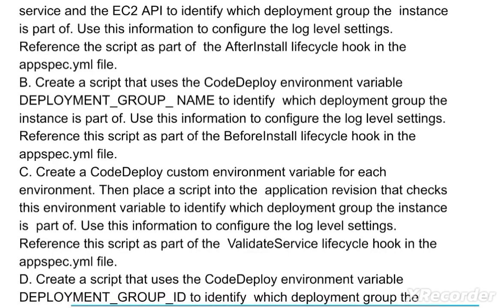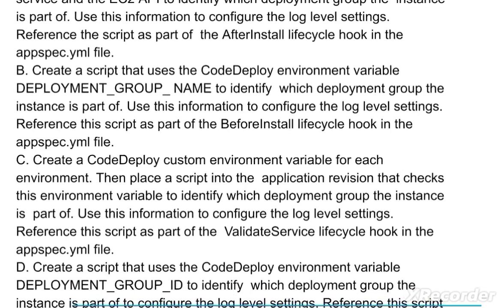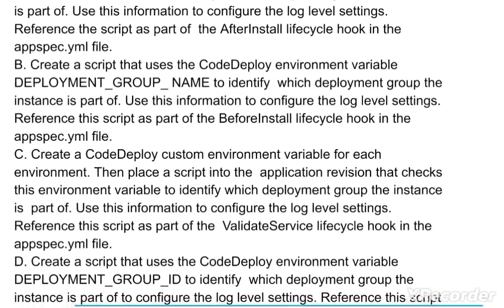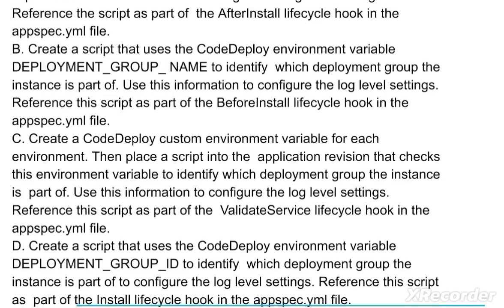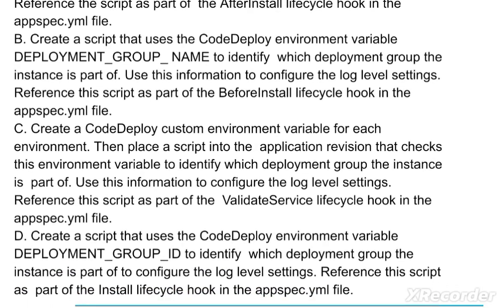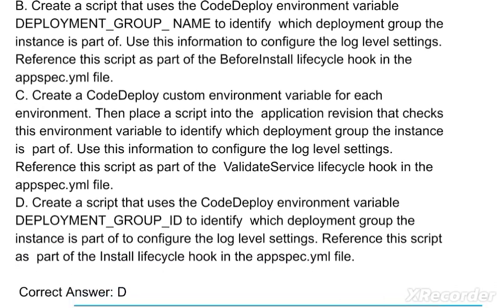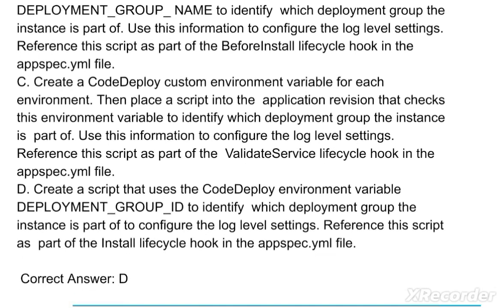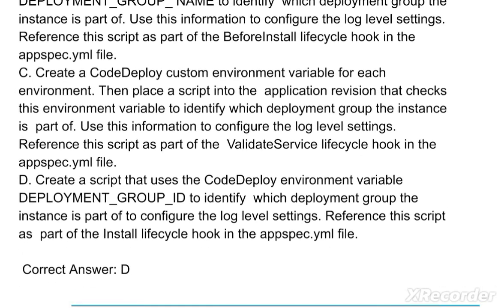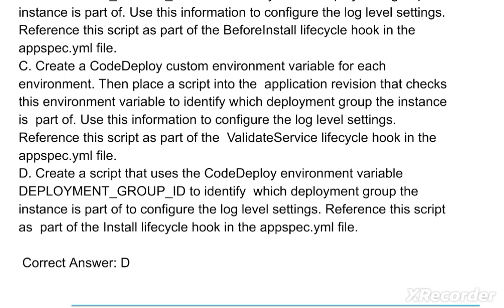Option C: Create a CodeDeploy custom environment variable for each environment, then place a script into the application revision that checks this environment variable to identify which deployment group the instance is part of. Use this information to configure the log level settings. Reference the script as part of the ValidateService lifecycle hook in the appspec.yml file.